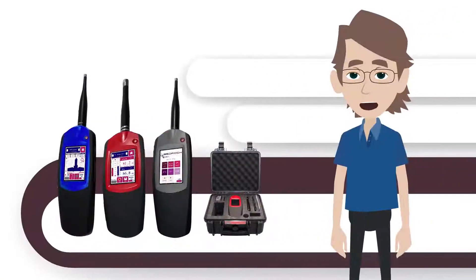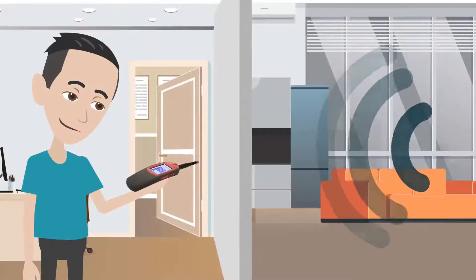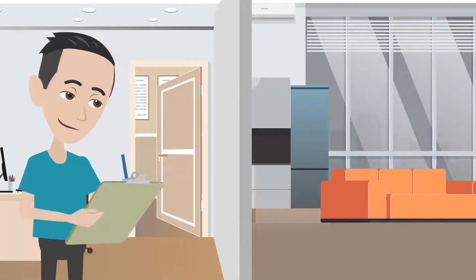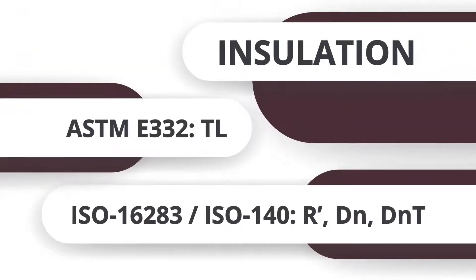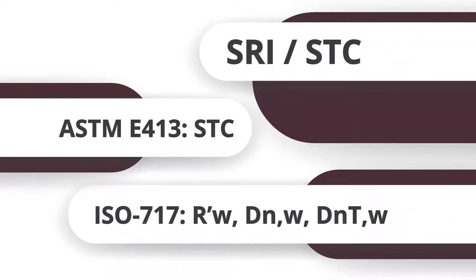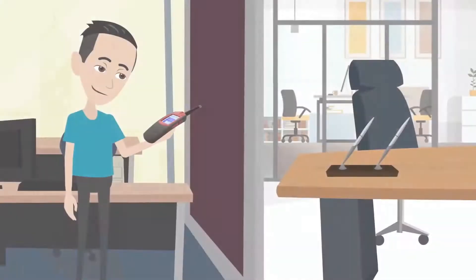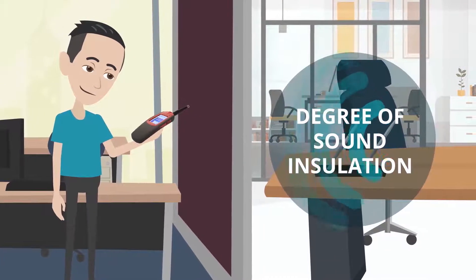The building acoustics modules are a little different from most of our other modules. That's because each value that we determine is actually based on multiple measurements. We have two modules. Insulation measures frequency-dependent sound insulation curves defined by ISO and ASTM standards. SRI and STC expresses sound insulation in a single number measure. Both modules operate more or less in the same way — they both measure the degree of sound insulation achieved by constructions inside buildings.